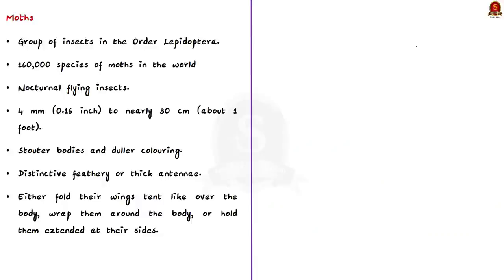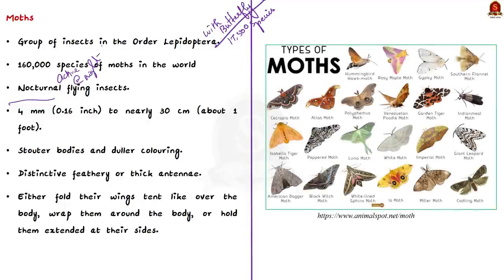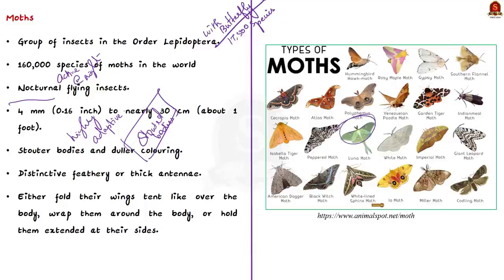Moths are a group of insects in the order Lepidoptera — they share this order with butterflies. There are some 160,000 species of moths in the world compared to 17,500 species of butterflies. They are nocturnal flying insects, meaning they are most active at night. Moths vary greatly in size, ranging in wingspan from about 4 mm to nearly 30 centimeters, and are highly adaptive to a wide range of habitats. Compared to butterflies, moths have stouter bodies, duller coloring, and distinct feathery or thick antennae. When at rest, moths fold their wings tent-like, wrap them around the body, or hold them flat at their sides, whereas butterflies hold their wings vertically.